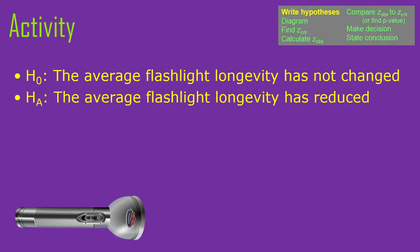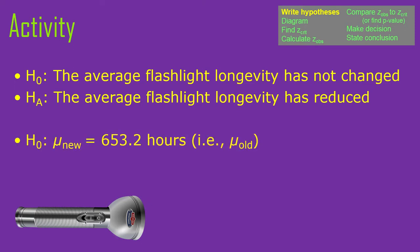The null hypothesis in words: the average flashlight longevity has not changed — it's the same as the old process, with the same mean. The alternative hypothesis is clearly directional: the average longevity has reduced. In symbols, the null is mu-new equals 653.2 hours, and the alternative is that mu-new is less than 653.2 hours, meaning our sample comes from a population with a lower mean.